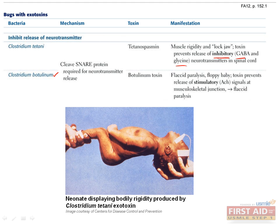Clostridium botulinum toxin also blocks the release of a neurotransmitter — in this case, acetylcholine from presynaptic nerve terminals — and causes a floppy paralysis. Look for other anticholinergic signs such as blurred or double vision, difficulty speaking or swallowing, droopy eyes, muscle weakness, or GI symptoms such as constipation. The paralytic effects progress in a descending fashion. Both Clostridium tetani and Clostridium botulinum toxins function by cleaving SNARE proteins, which are required for the release of neurotransmitters from the presynaptic terminal.